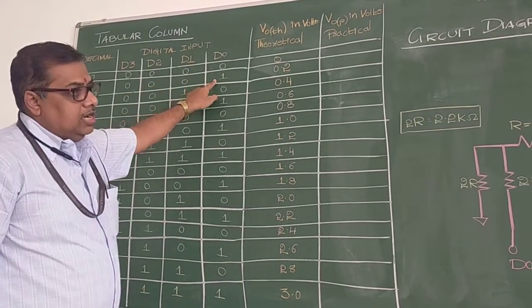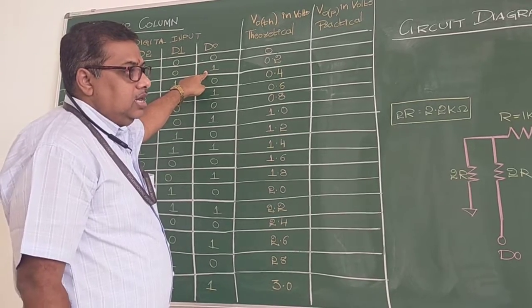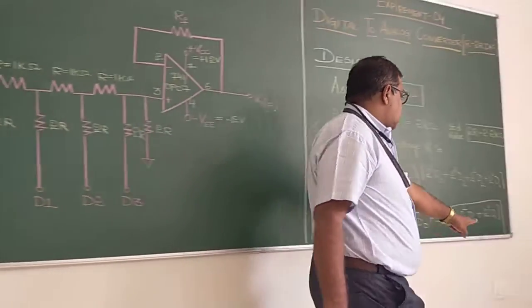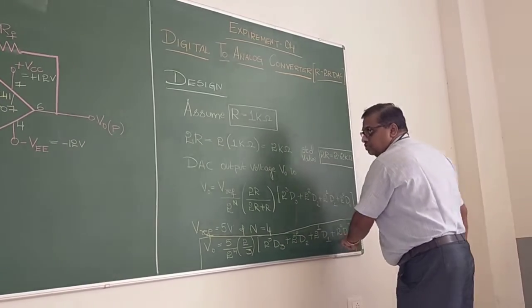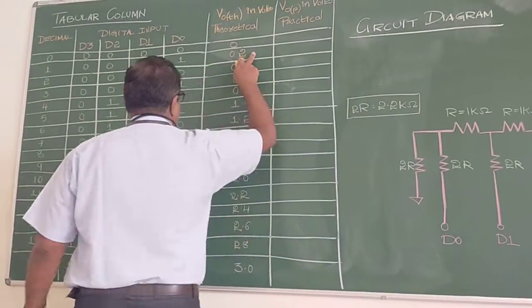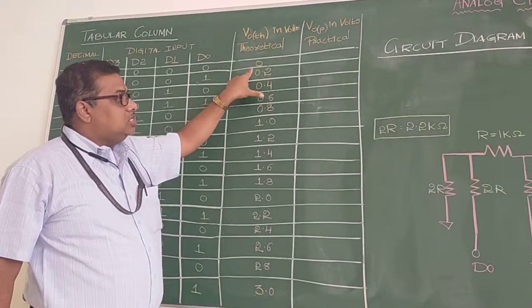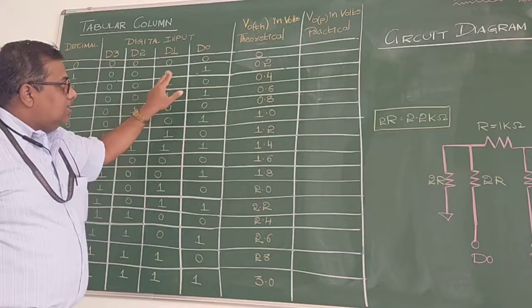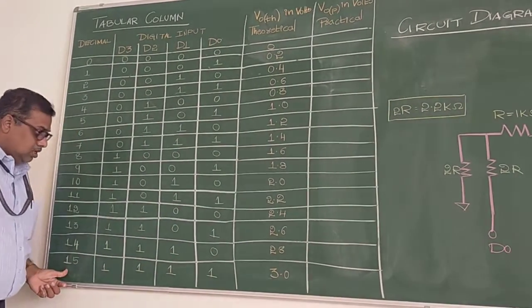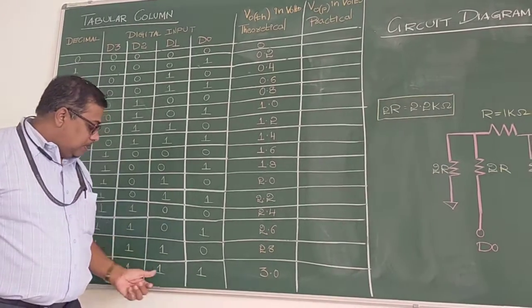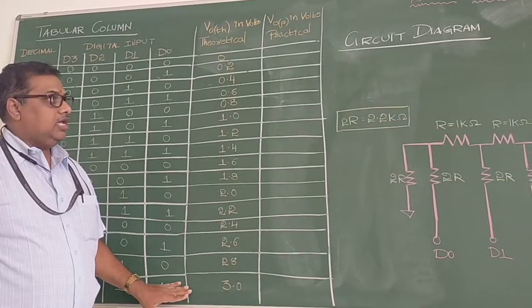Now if I substitute the last digit D0 to be equal to 1, then it will become 5 by 16 into 2 by 3 times 1. If I simplify that, for a 1 bit change, that is one LSB, for a 1 LSB change we get the analog corresponding voltage as 0.2. Similarly if I change the bit pattern it will become 0.4, similarly for 3 it is 0.6, and we have calculated for all the values. The final value, that is when all the bits are high from LSB to MSB, all the bits are high, we get the analog as 3 volts. This is what the theoretical value we call.